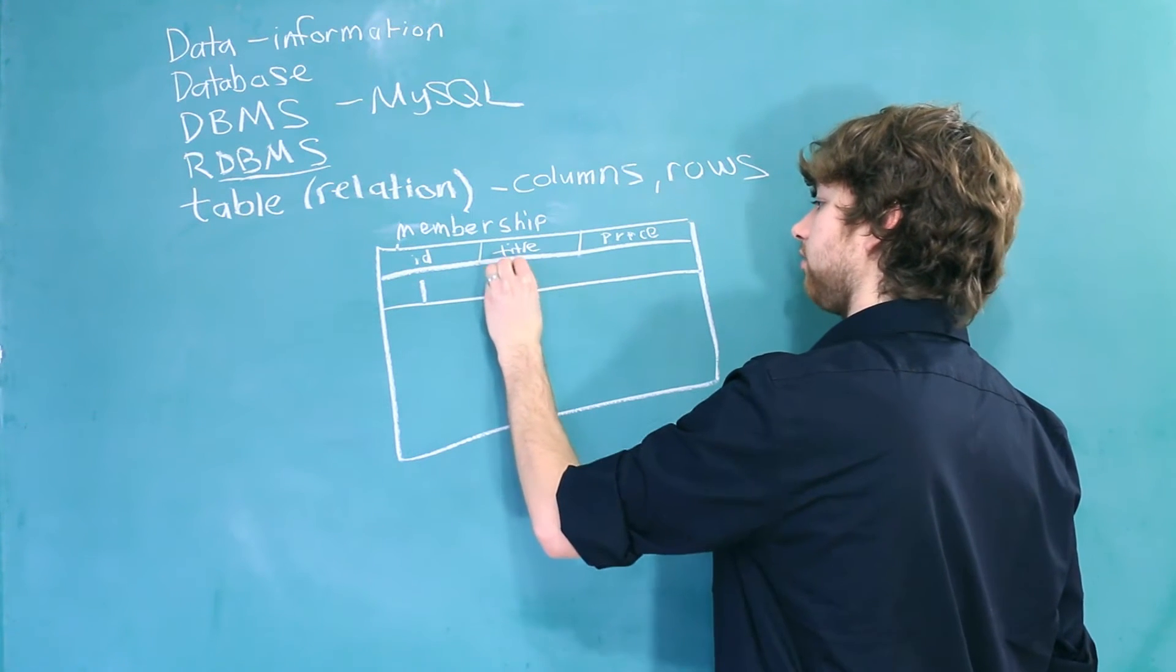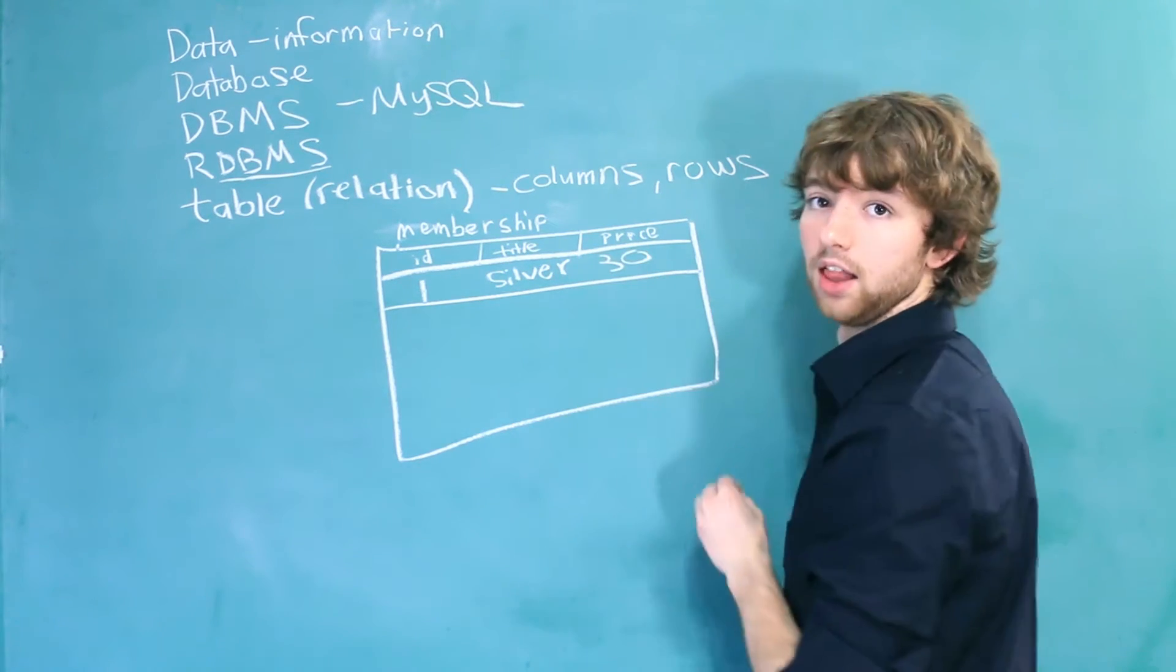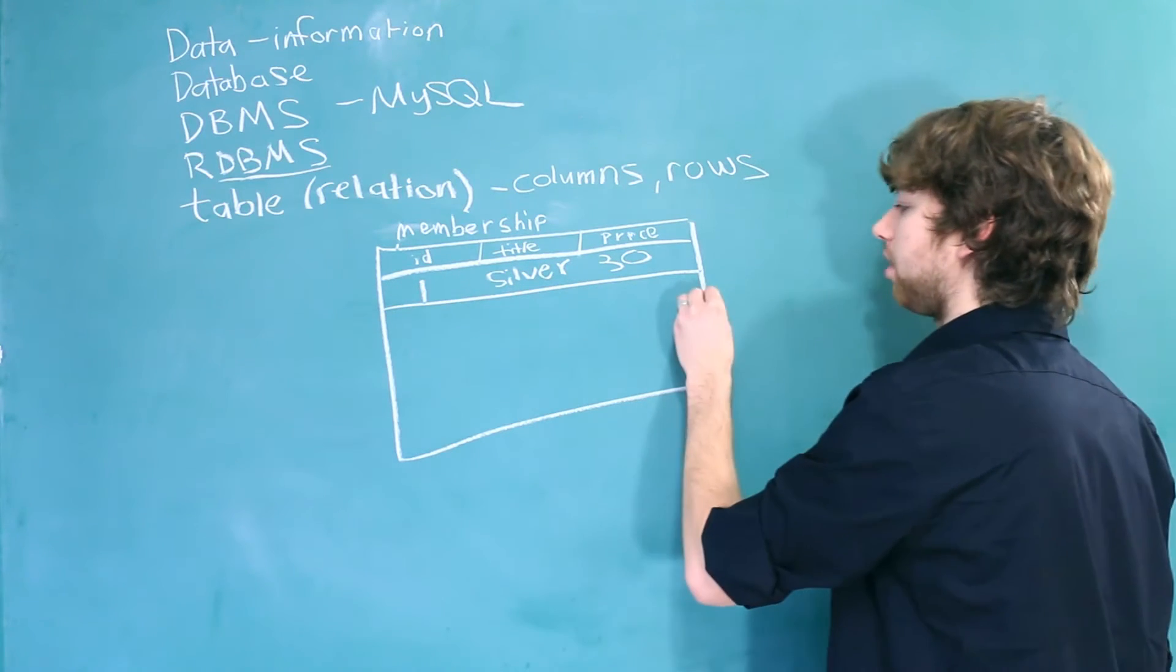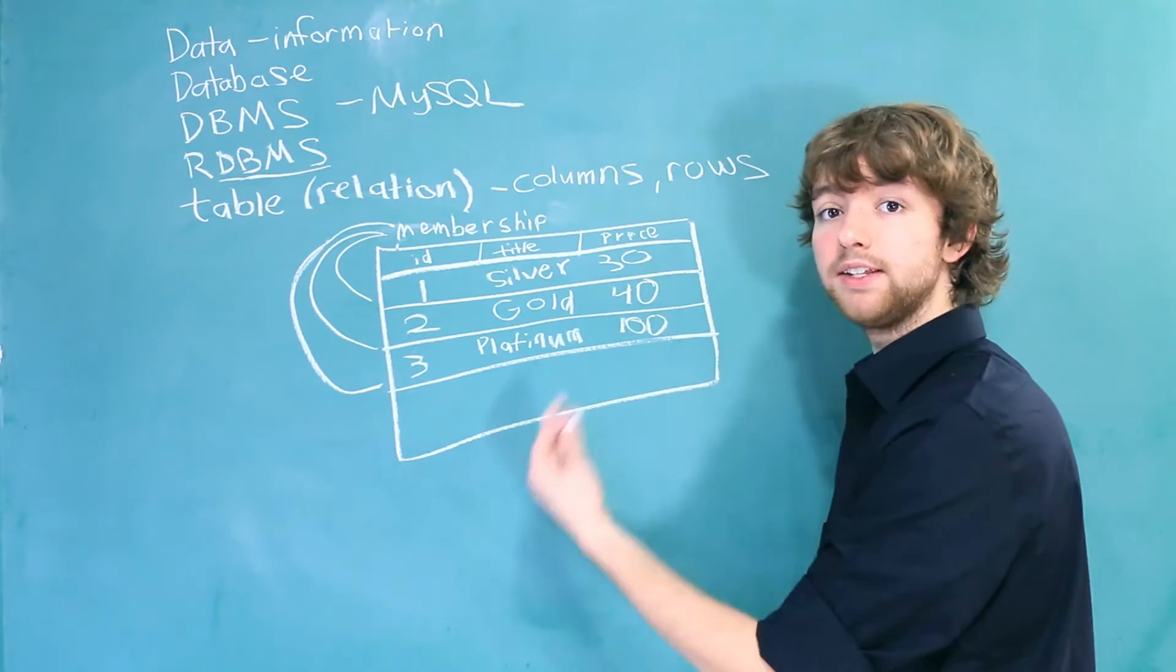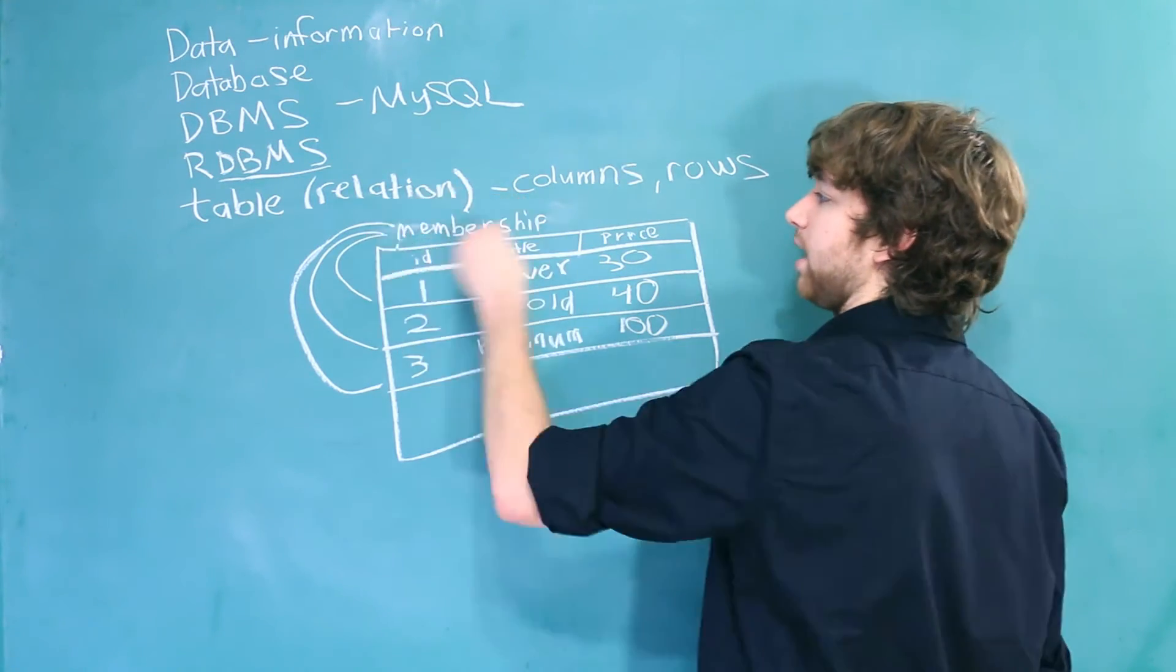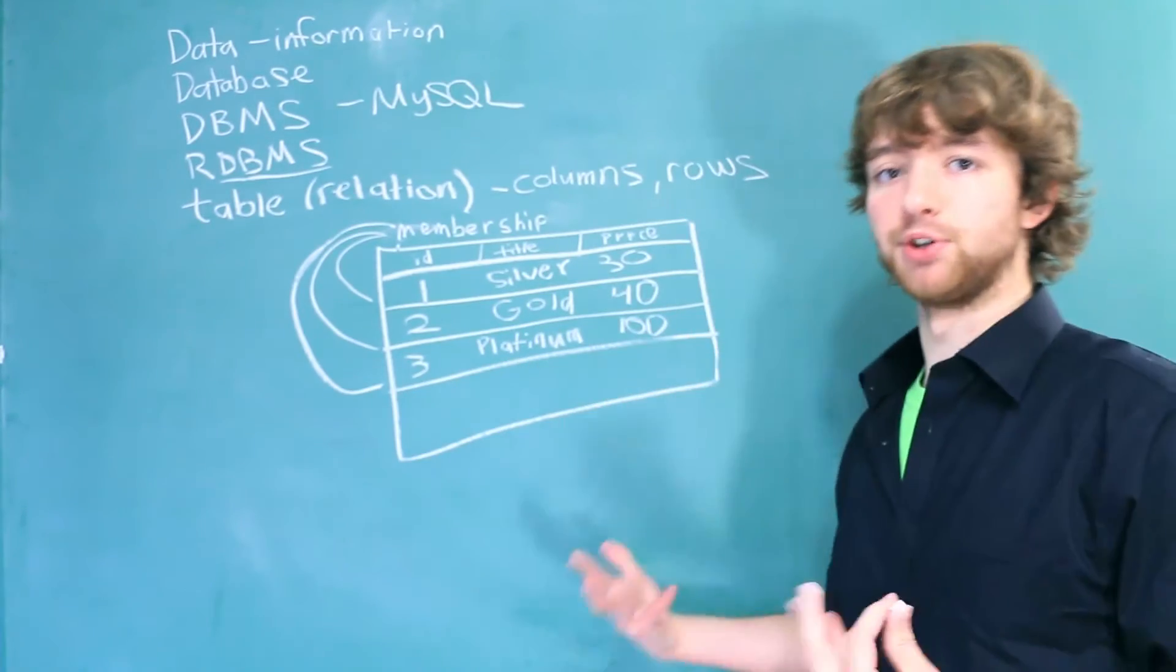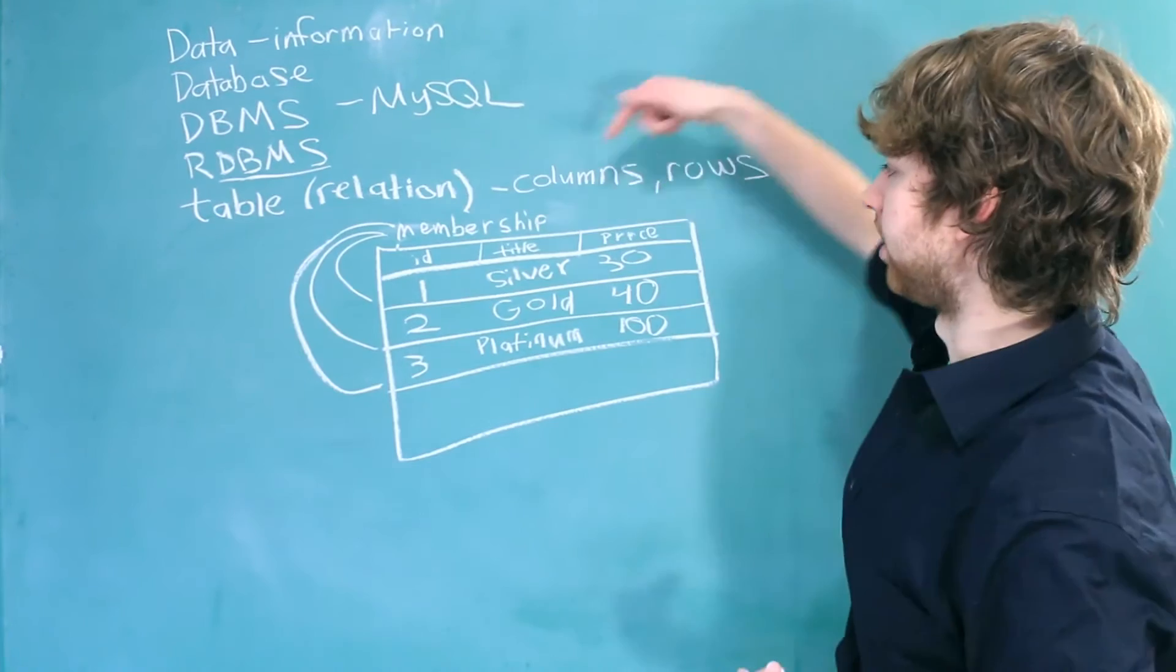And the price could be $30 or 30 whatever. That is an example of a row. And we often have multiple rows inside of a table. You can think of the rows as instances of whatever the table is describing. So each row is an example of a membership. And the data it has is the ID, title, and price.